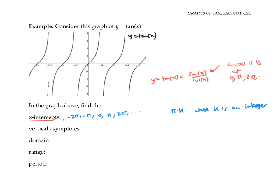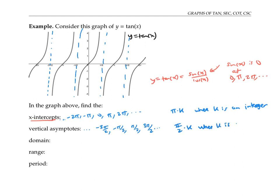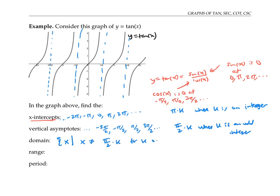From the graph, you can see the vertical asymptotes are at values like negative three pi over two, negative pi over two, pi over two, and three pi over two. These values can be written as pi over two times k, where k is an odd integer. This makes sense from the definition of tangent, since the vertical asymptotes will occur where the denominator is zero, and cosine x is zero at numbers like negative pi over two, pi over two, three pi over two, and so on. The domain of tangent is everything except for the vertical asymptotes — we can write that as x such that x is not equal to pi over two times k, for k an odd integer. The range goes all the way from negative infinity to infinity, and the period, as mentioned, is pi, since the smallest repeating unit has a horizontal width of pi.